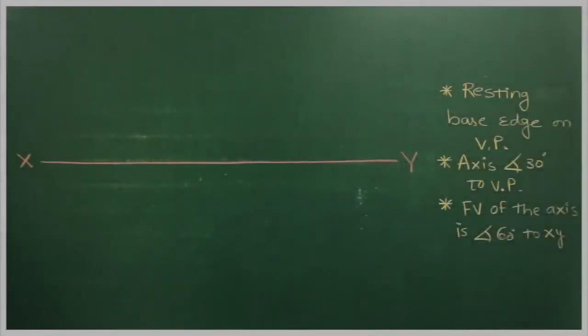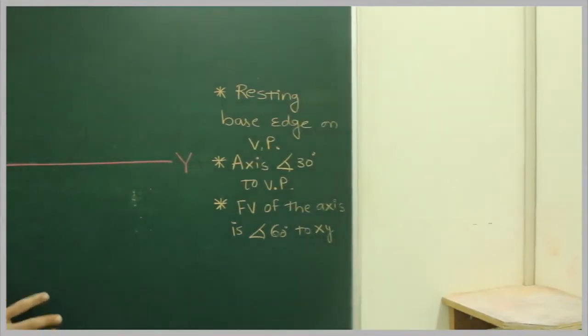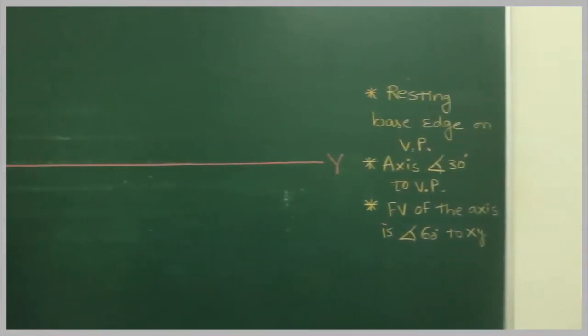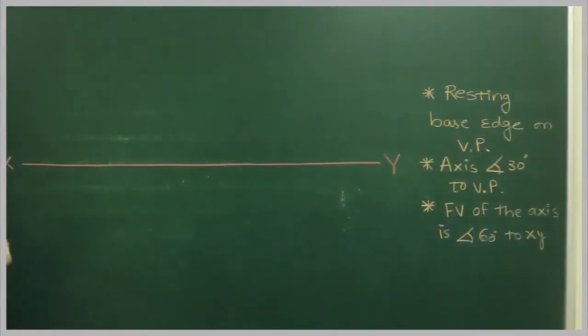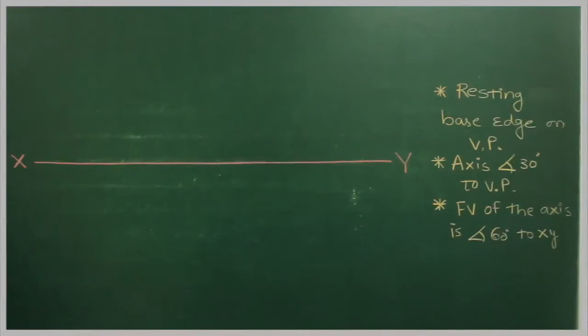In this sum, it is resting on one of its base edge on vertical plane. An axis is inclined at 30 degree to vertical plane and front width axis is inclined at 60 degree to x1i. Now see, in this case, axis is inclined to VP. So if axis is inclined to VP, then first we will draw axis perpendicular to vertical plane. So front width will give it row shape. And they have already said that it is resting on one of its base edge on vertical plane.